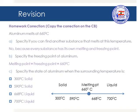Let's start by correcting the homework. Please make sure to copy the correction on your copybook. We have aluminum melts at 660 degrees Celsius. Can you find another substance that melts at this temperature? The answer is no, because every substance has its own melting and freezing point, so we can't find two substances with the same melting points.